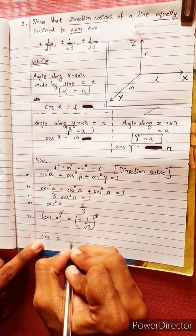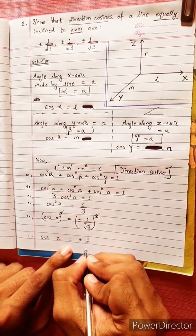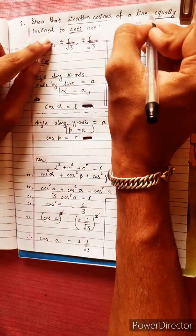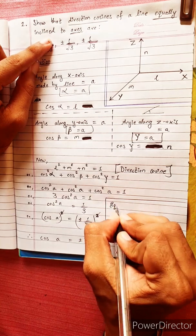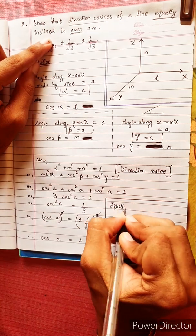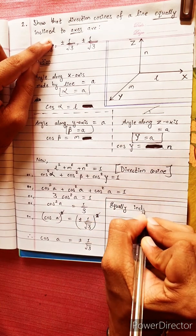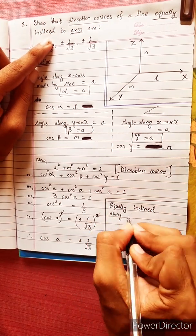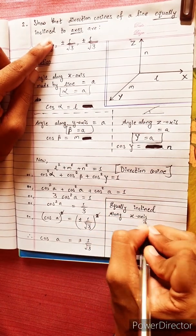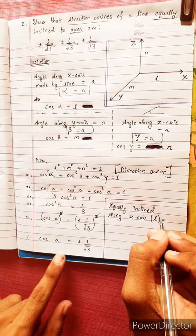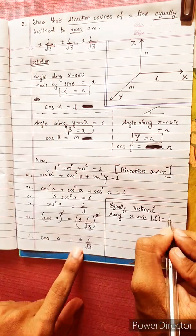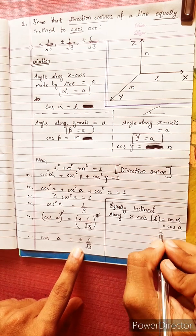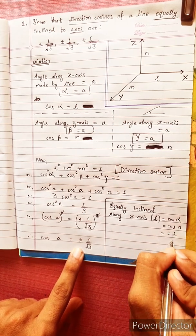Therefore, cos A equals plus or minus 1 by under root 3. Since the line is equally inclined to all axes, cos alpha equals L equals plus or minus 1 by under root 3.